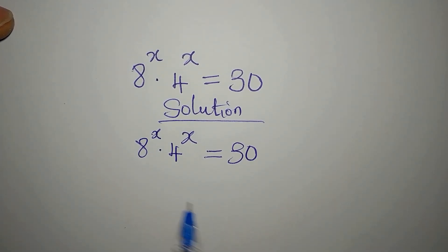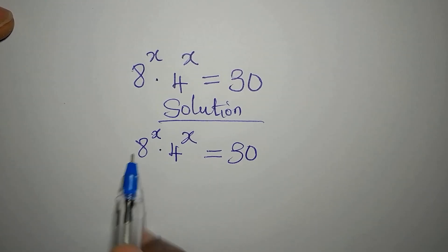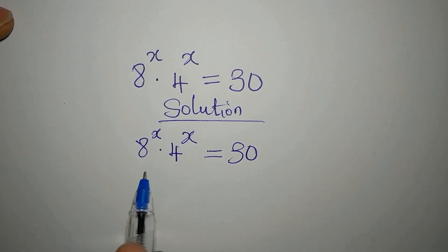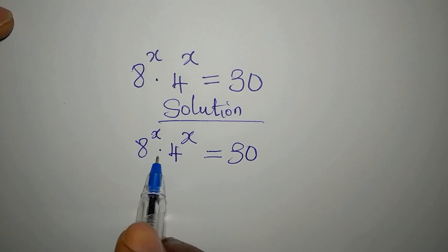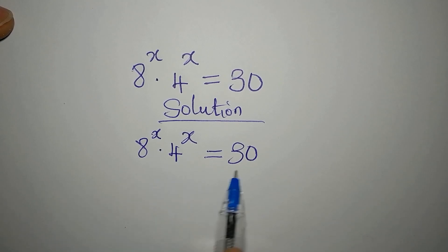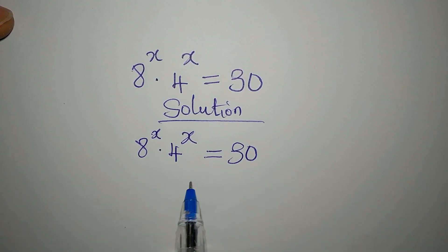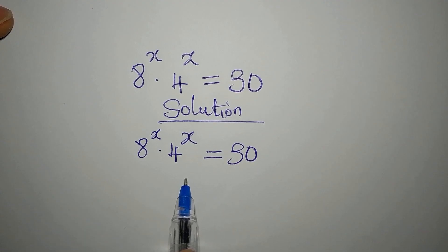Hi everyone, let's provide a solution to this problem: 8 to the power of x multiplied by 4 to the power of x equals 30. If you're new to my channel, subscribe so you can get more of my videos.